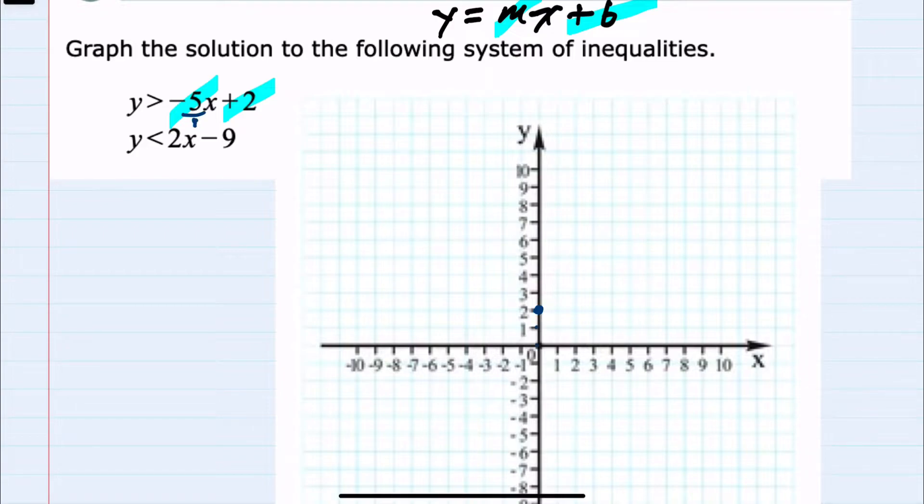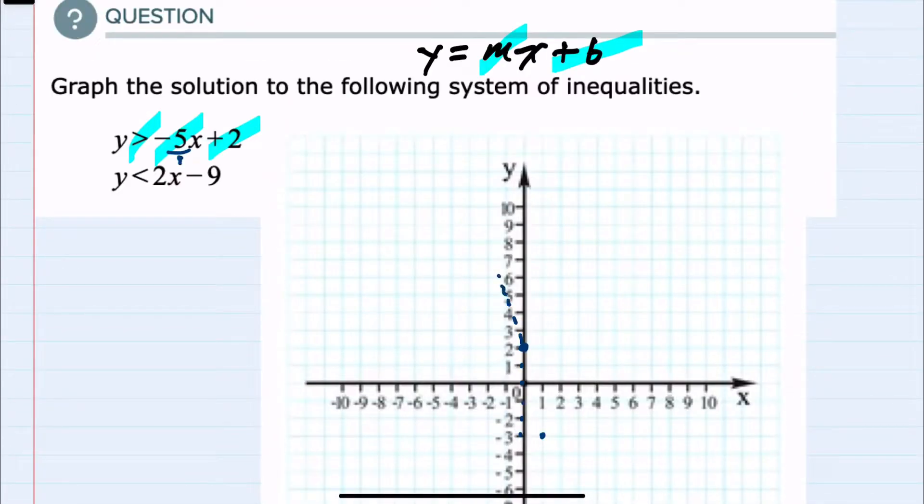Looking back at the inequality sign, this is greater than, and since it isn't greater than or equal to, I'll need to draw it as a dotted line, meaning that the points on this line do not satisfy this inequality.